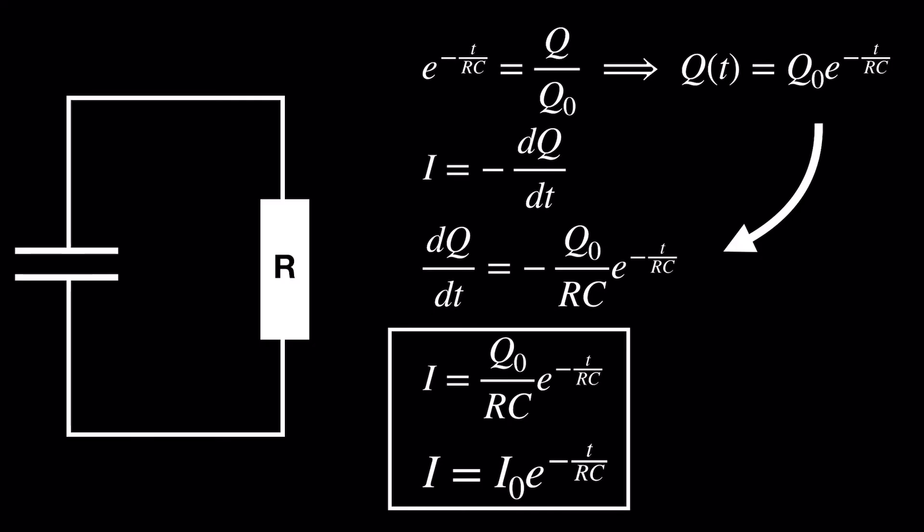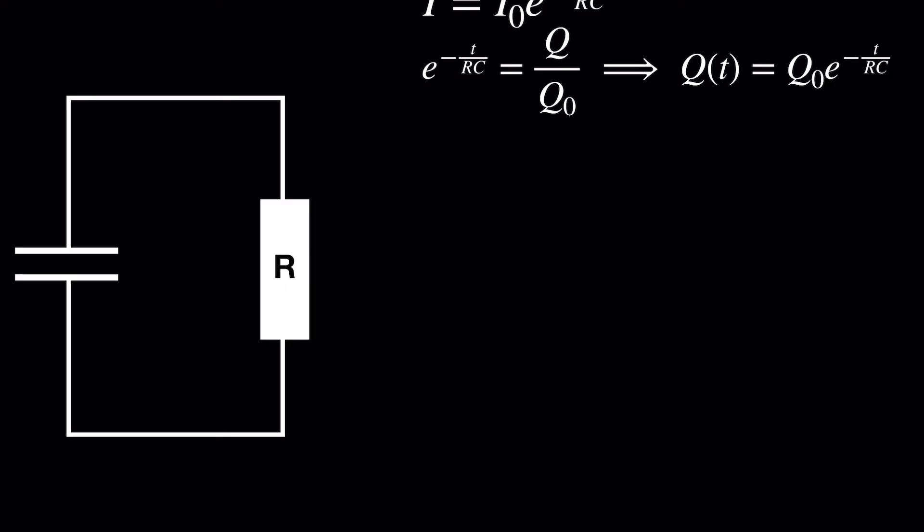The final potential difference equation is even easier. We once again use the definition of capacitance to see that the potential difference across the capacitor is Q over C. So if we divide both sides of our first equation by C, we can substitute the voltage in.